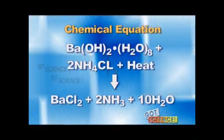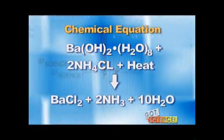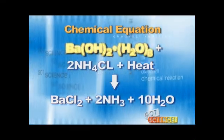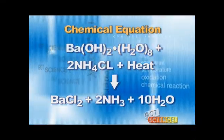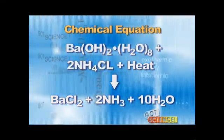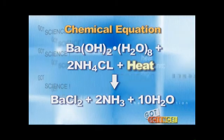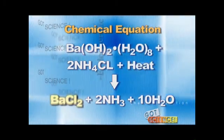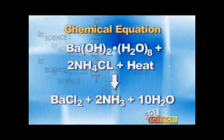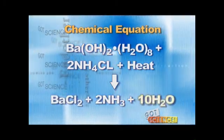The chemical equation for the reaction looks like this: barium hydroxide combines with ammonium chloride and heat to produce barium chloride, ammonia, and water.